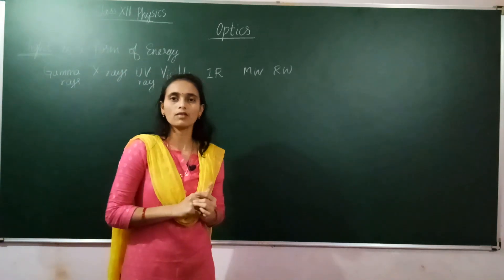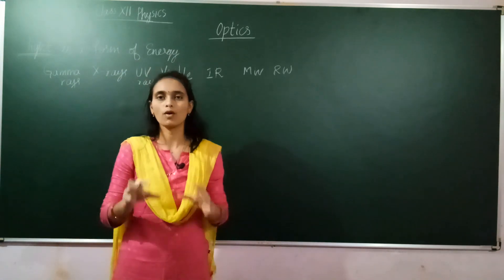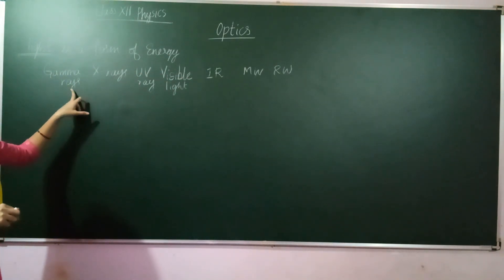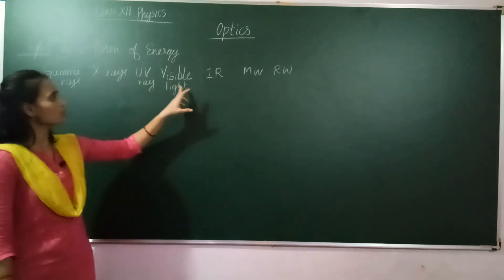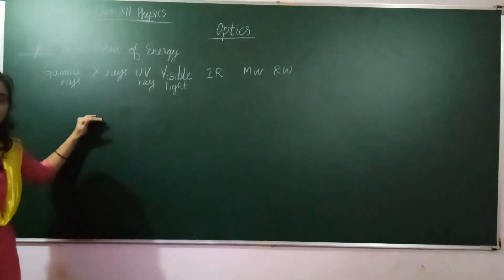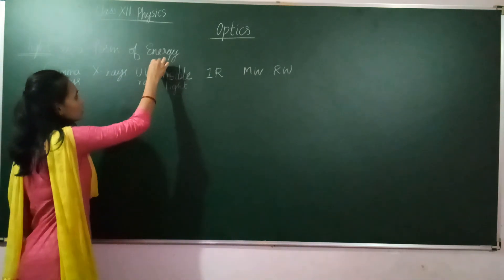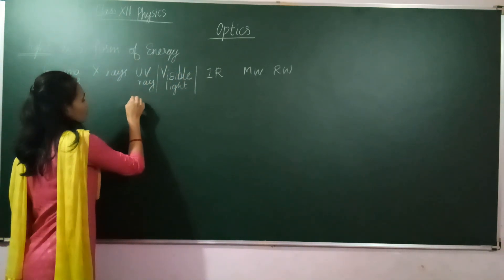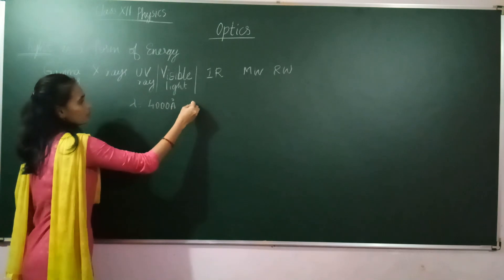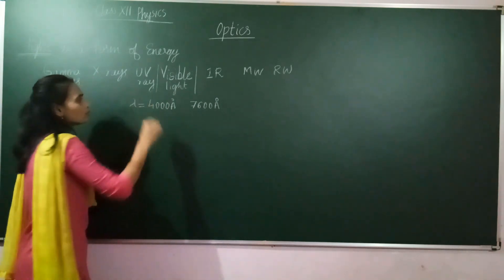What is light? Light is a form of energy — that is our basic definition. But in class 12 we will study that light is a part of the electromagnetic spectrum. The electromagnetic spectrum consists of different rays: gamma rays, X-rays, UV rays, visible light, infrared rays, microwaves, and radio waves.